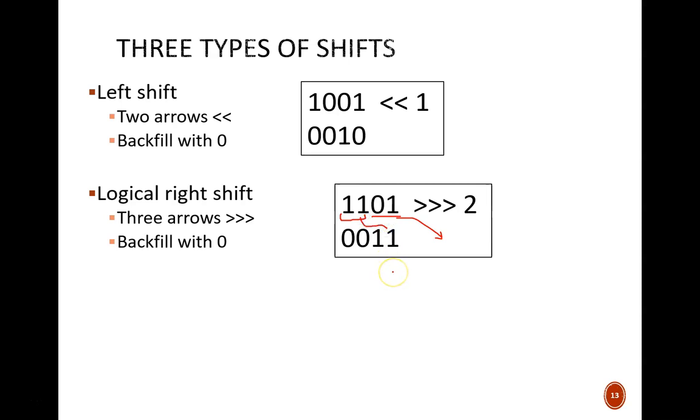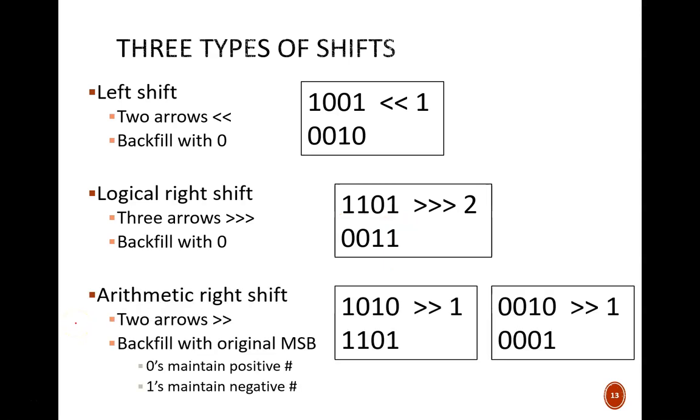Most often we'll shift by one bit, but it is good to see an example with a different number. The third type is an arithmetic shift right. This is indicated by two right arrows. The difference here is that the backfill value is determined by whatever the original most significant bit was. So in the first example, we see a leading one. That original one got shifted down like usual, and this new backfill bit is a 1 in order to match.